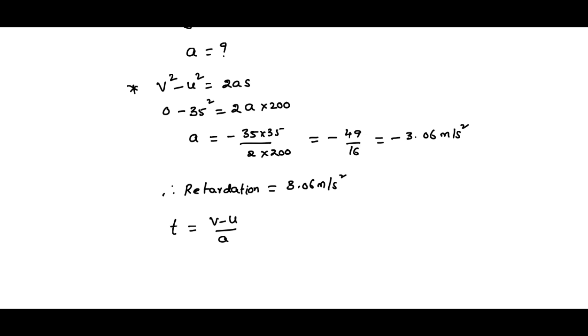So t equals v minus u by a. I'm taking that as 0 minus 35 divided by a. If you're taking u as positive and a as minus 3.06, then that equals minus 35 divided by minus 3.06, that is equal to nearly 11.43 seconds.